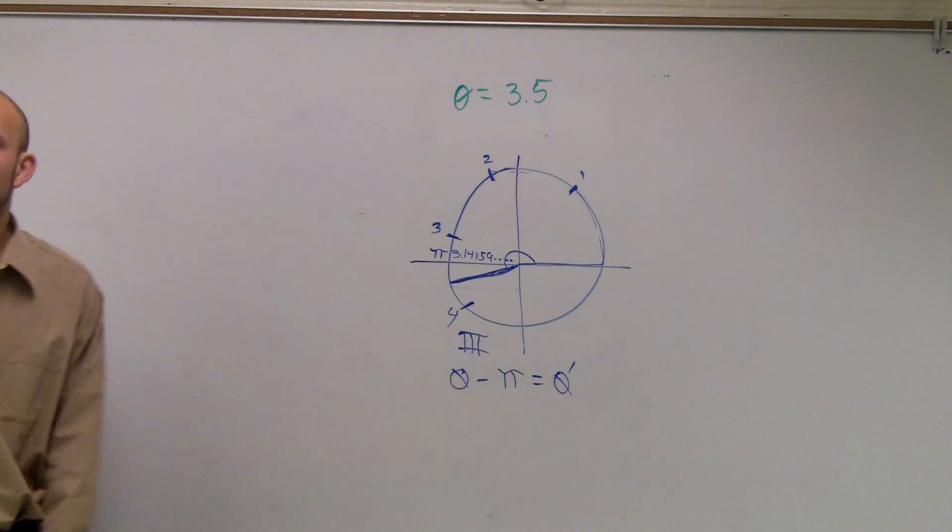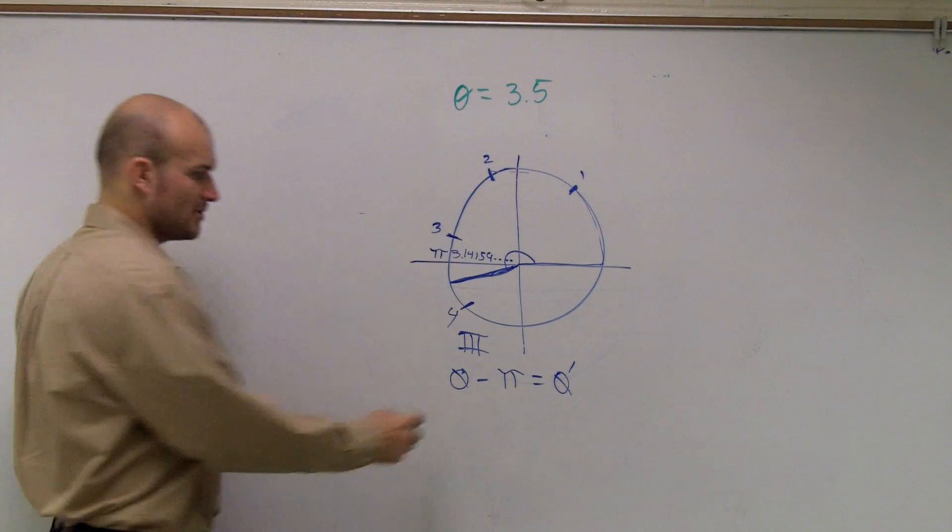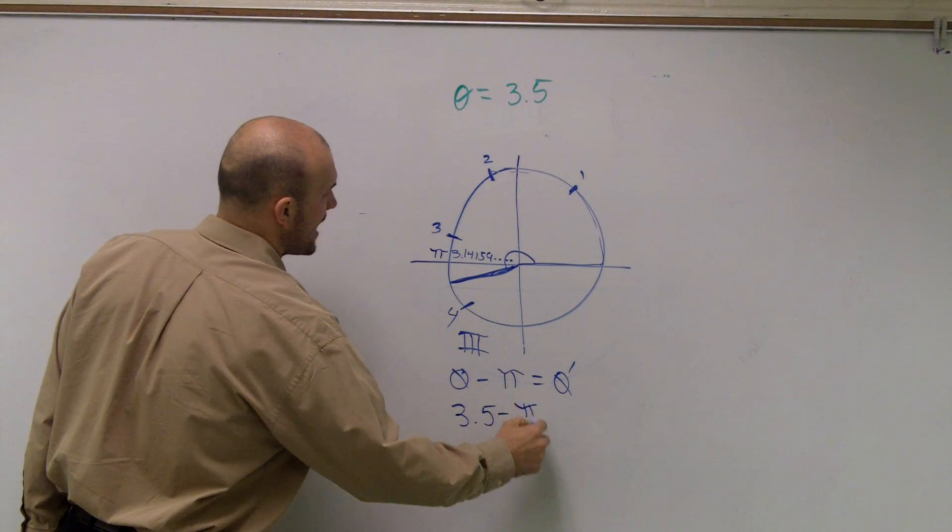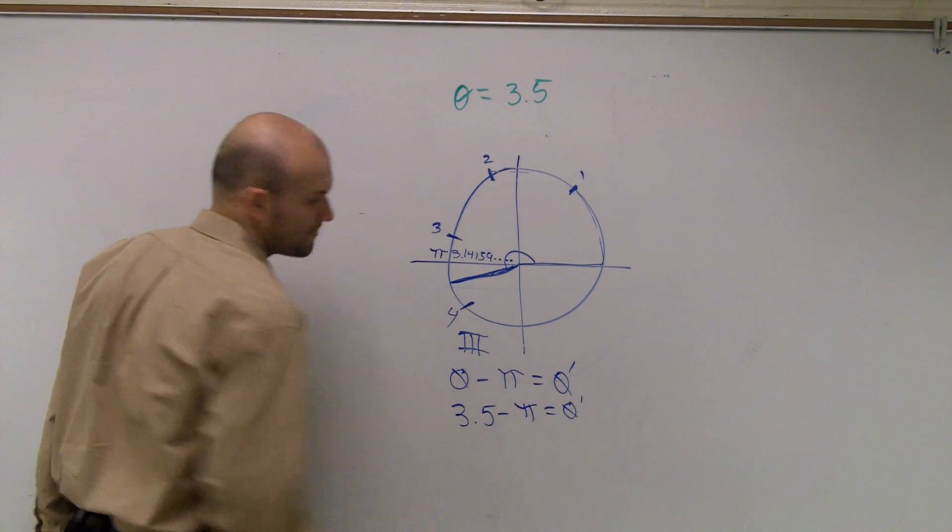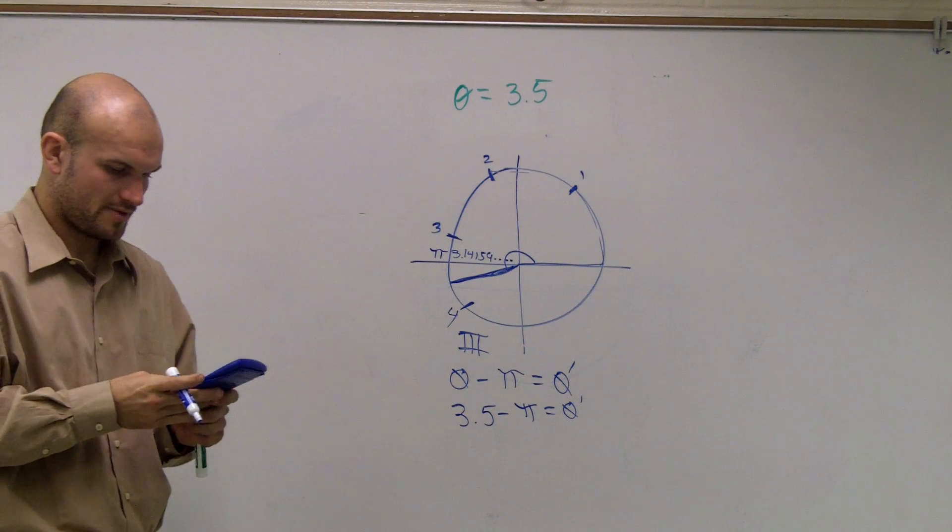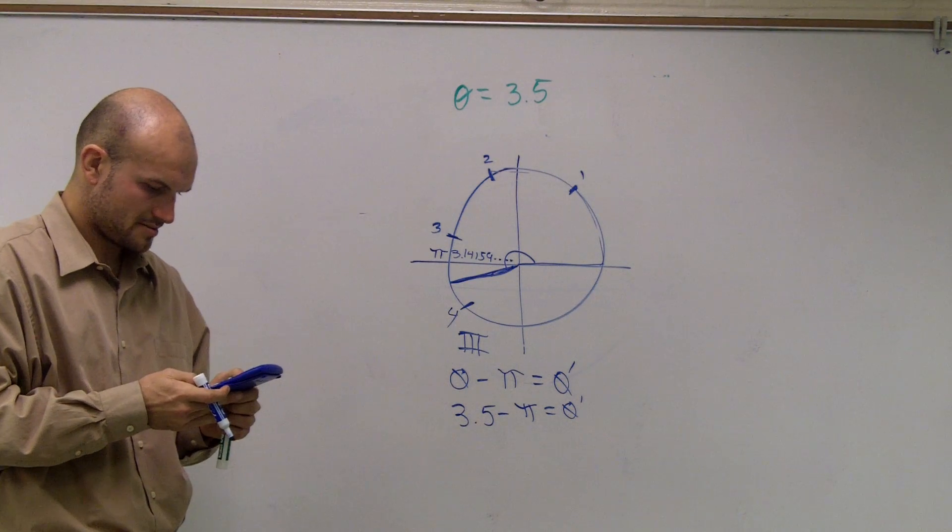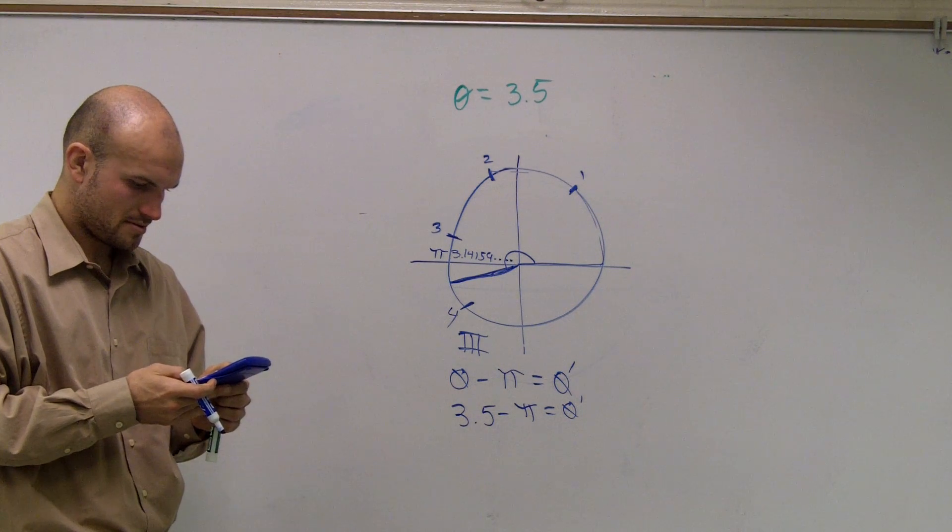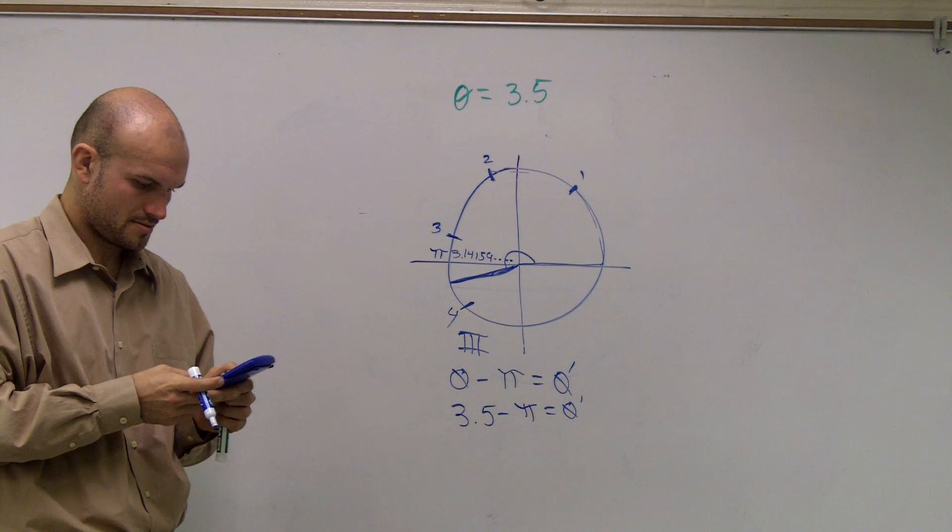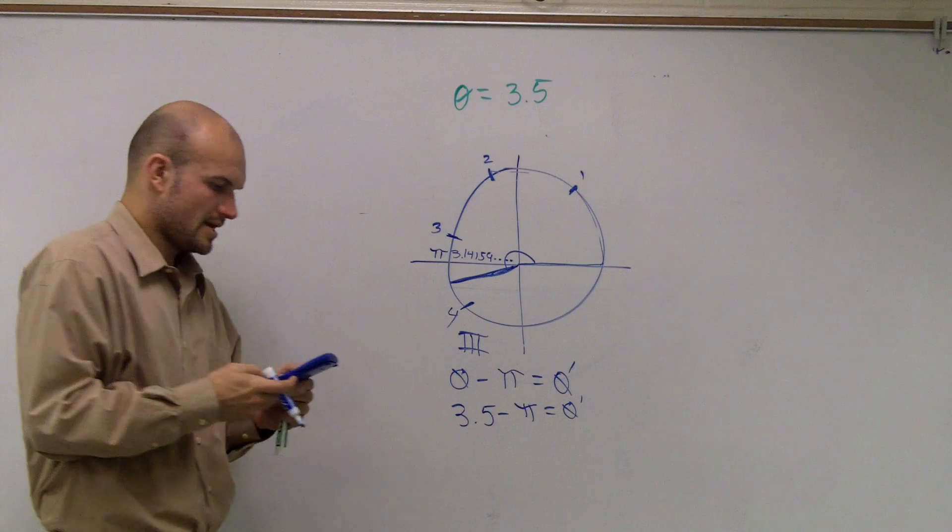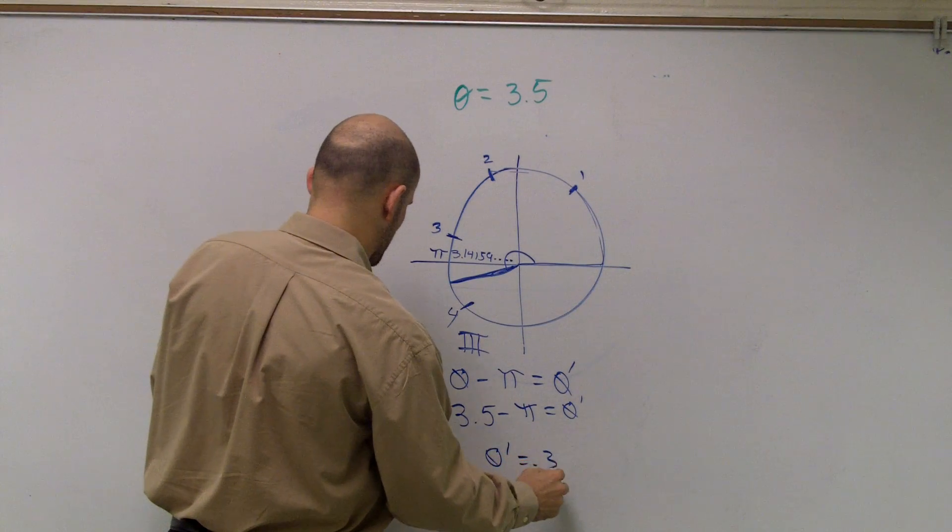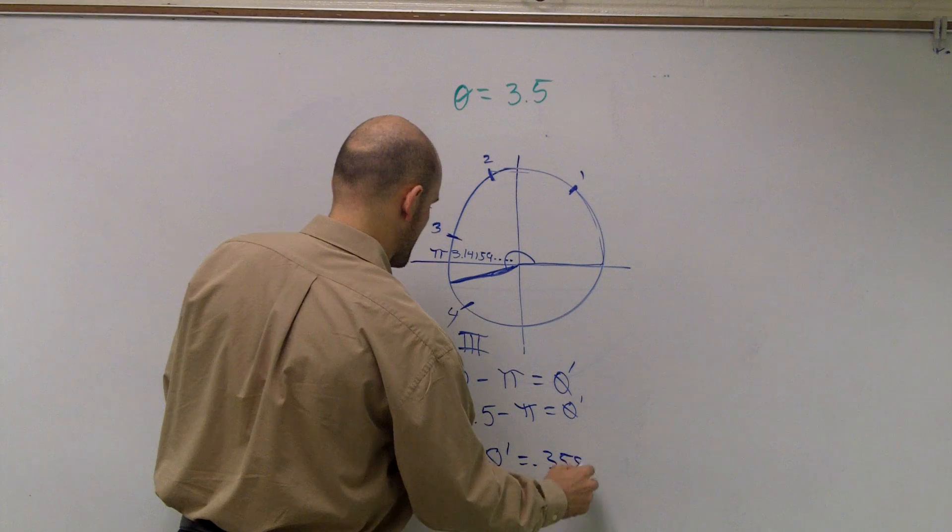So my angle is 3.5 minus pi equals theta prime. And I'll take my handy calculator, 3.5 minus pi, and I get theta prime equals 0.358.